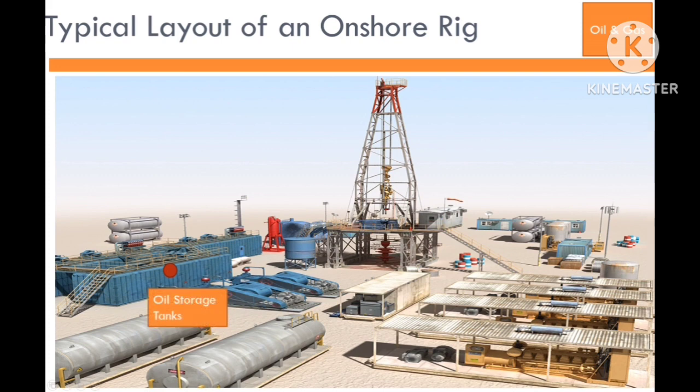Oil storage tanks at a rig site temporarily hold extracted crude oil before it's transported for further processing. They collect, separate, and provide buffer storage for the oil. Once filled, the oil is transferred to larger storage or processing facilities.